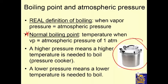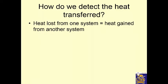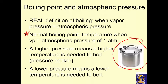In a pressure cooker, there's high atmospheric pressure inside, so the liquid doesn't boil at the same temperature as it would at normal pressure — the liquid stays liquid longer because there's higher pressure on it. Conversely, a lower pressure means a lower temperature is needed to boil.